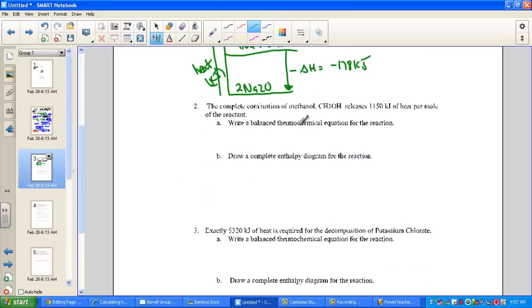The complete combustion of methanol, CH3OH, releases 1150 kJ of heat per mole of the reactant. Let's write the balanced thermochemical equation. The skeleton for combustion takes our hydrocarbon, methanol CH3OH, requires oxygen during combustion, and out comes carbon dioxide and water.